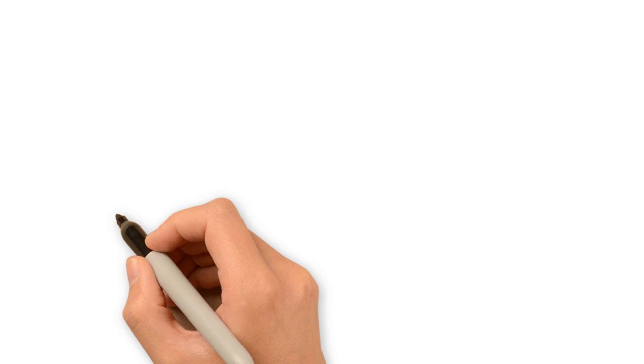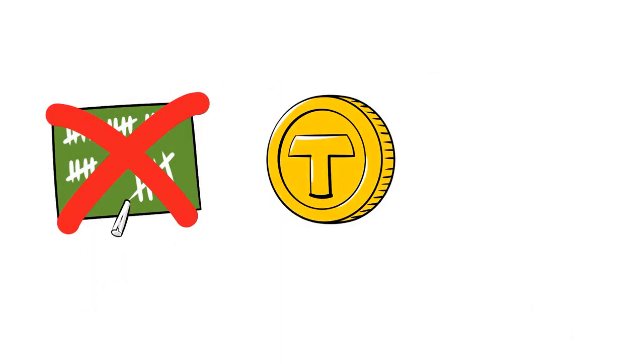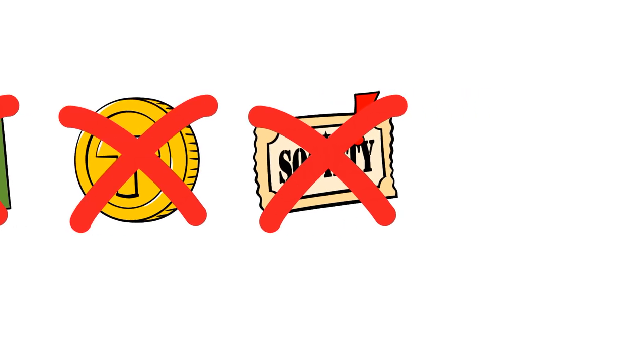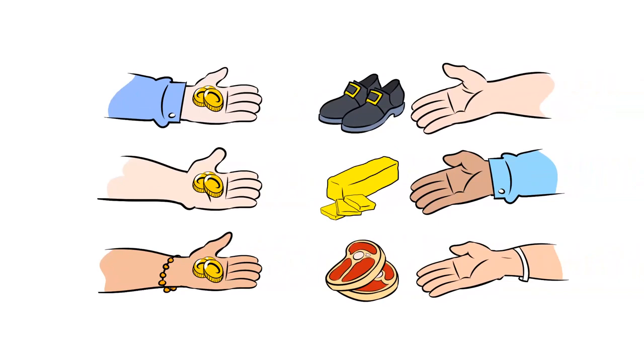As such, money did not begin as an abstract unit of account. It is not a useless token only good for exchanging. It is not a claim on society. It was simply a commodity. Like commodities, its price, in terms of other goods, is still determined by supply and demand, today.